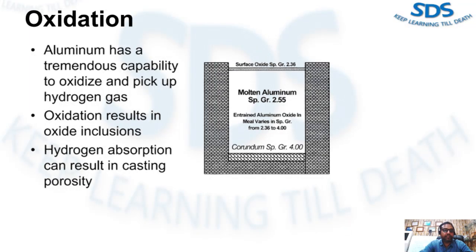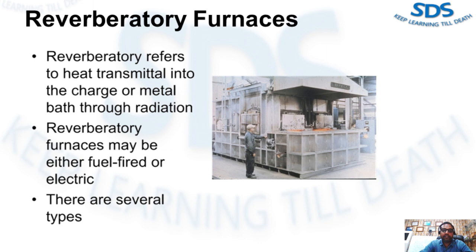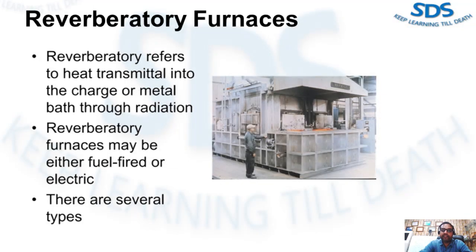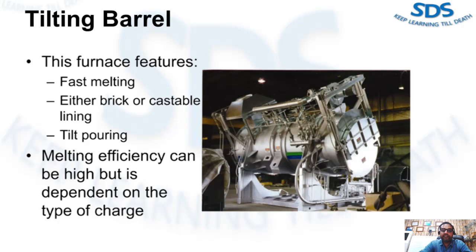The first furnace type used in melting processes is the reverberatory furnace. Reverberatory furnaces refer to heat transmitted into the charge or metal bath through radiation, such as heat radiating from the furnace roof and side walls. Reverberatory furnaces may be either fuel-fired (gas or oil) or electric. There are several different types of reverberatory furnaces. The first is the tilting barrel — this furnace features fast melting and either brick or castable lining with tilt pouring. Melting efficiency can be high but is dependent on the type of charge.